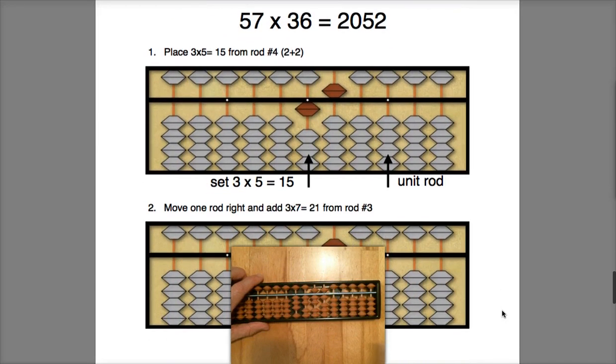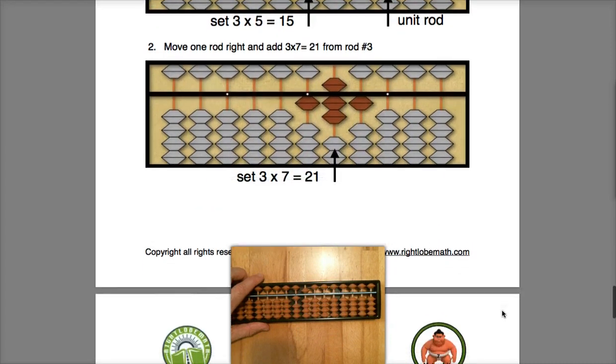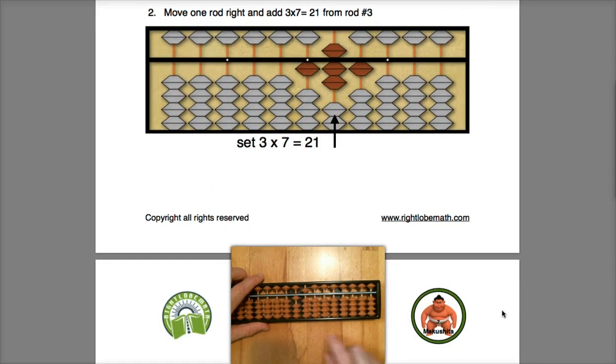Let's go ahead and do one last example. Again, I will count off four digits: one, two, three, four. I will start here with my first multiplier digit 3 and have 3 times 5, which is 15. That's very straightforward. Then I'm going to move one rod right and multiply 3 times the 7, and I have 21.